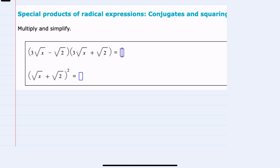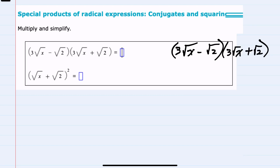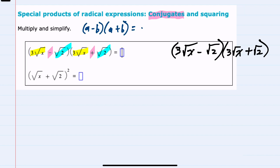We have two expressions here to simplify. Starting with the first, we can see that we have the same 3 square root of x in each one of these parentheses, and the same square root of 2. In the first there is a minus and in the second a plus — these are conjugates. When we multiply conjugates, we get the first term squared minus the second term squared. So we can use this as a shortcut, or alternately we could just do the distribution or the FOIL method to multiply things out and simplify.